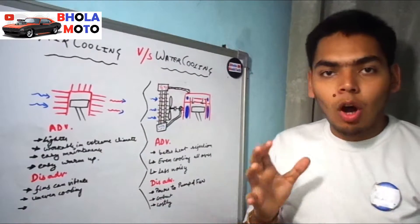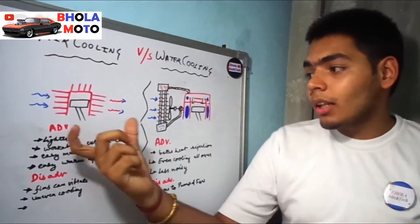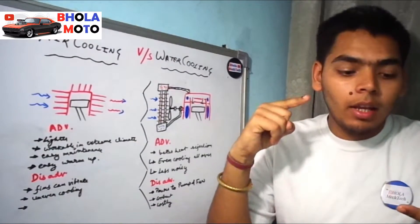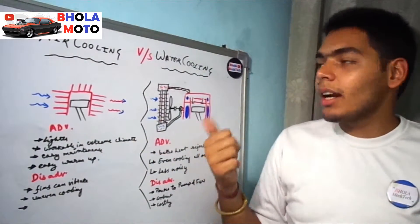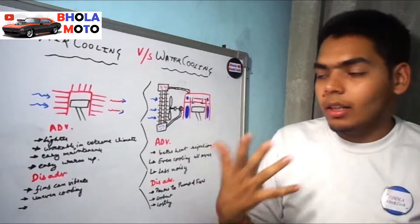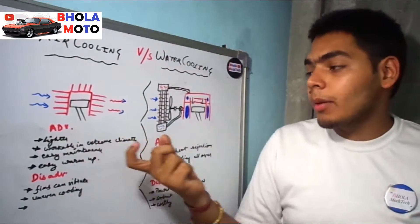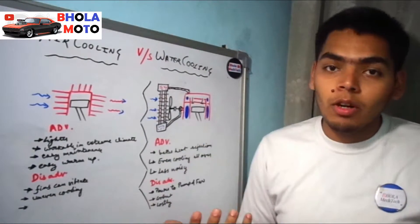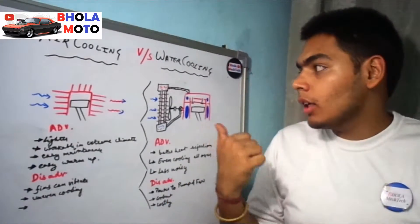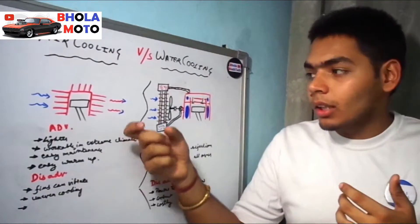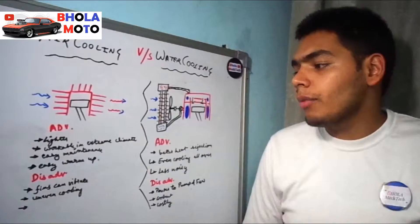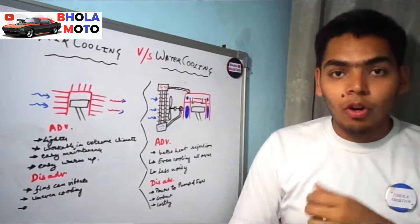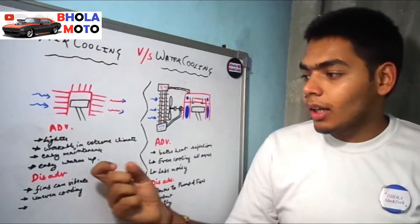Now coming to the advantages and disadvantages of both systems. For the air-cooled engine: it is lighter because it doesn't require any coolant, radiator, or pump. On the other hand, water-cooled engines are heavier due to the radiator, fan, and pump. Air-cooled engines are also workable in extreme cold climates — since there is no water, there is no risk of the coolant freezing. Maintenance is also much easier; you just need to keep the fins clean so that heat rejection can be better.